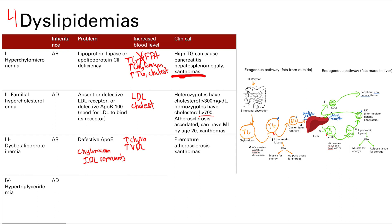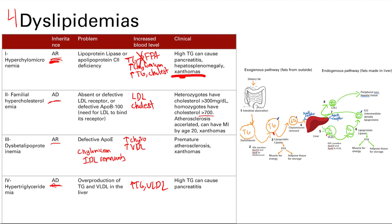The last one is hypertriglyceridemia, autosomal dominant. The inheritance pattern for all four goes: autosomal recessive, dominant, recessive, dominant — that's the easiest way to remember it. The problem here is overproduction of VLDL and triglycerides in the liver. If you're making a lot, it spills into the bloodstream, so your blood will have increased triglycerides and VLDL. Very high triglycerides can be a risk factor for pancreatitis.